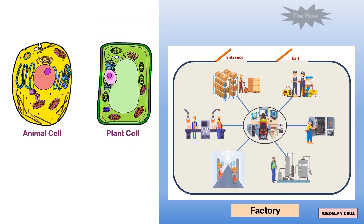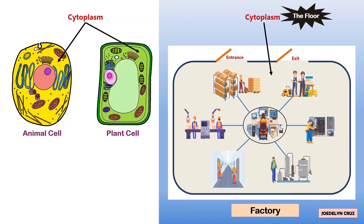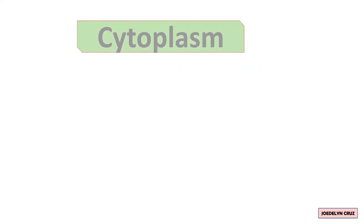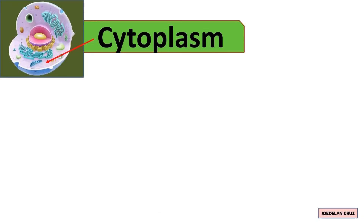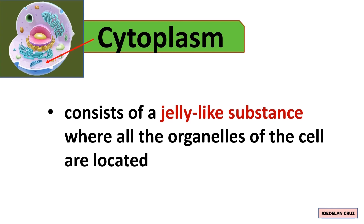The factory floor represents cytoplasm. It has all the workers, machines, and equipment on it. Cytoplasm consists of a jelly-like substance where all the organelles of the cell are located.